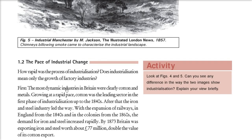Cotton was the most dynamic industry and the leading sector in the first phase of industrialization up to the 1840s. Because of the expansion of railways — in England in the 1840s and in the colonies from the 1860s — iron and steel were now required. By 1873, Britain was exporting iron and steel worth 77 million in British currency — double the value of cotton exports. So the shift had occurred from cotton to iron and steel.